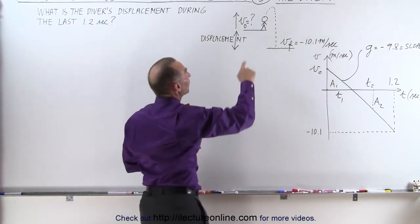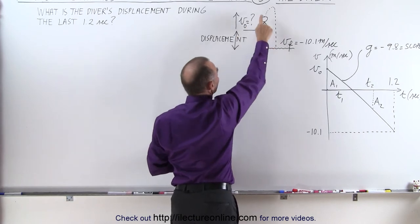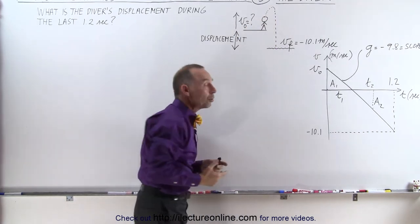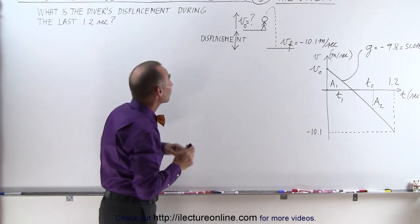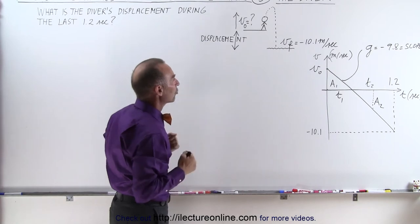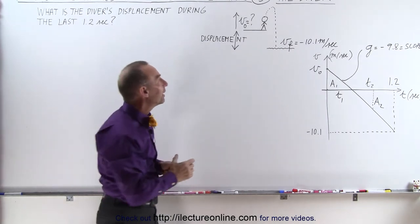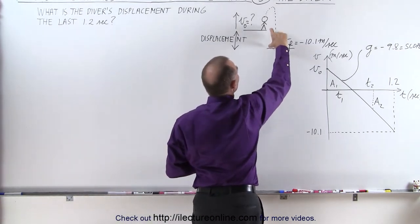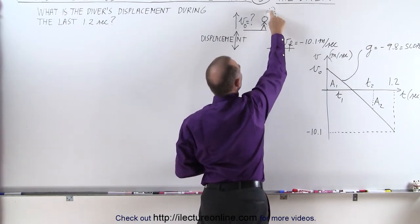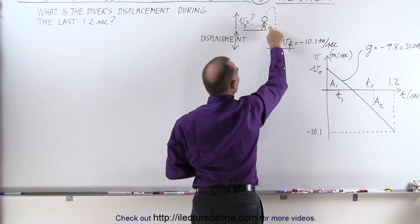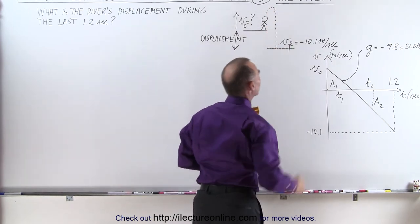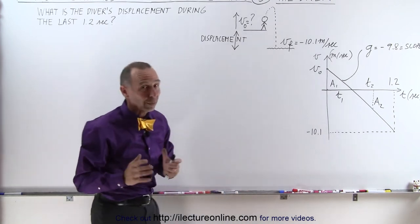We don't know the initial velocity of the diver in the upward direction, and we don't know how high the diver goes. There are a lot of things we don't know, but what we are asked is: what is the displacement of the diver over the entire trip? Displacement is a vector quantity, so only the net portion counts. The distance moving upward and back to the starting point cannot count — only the net displacement is what we're looking for.